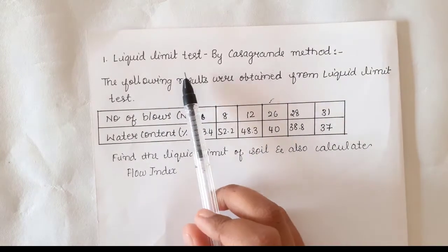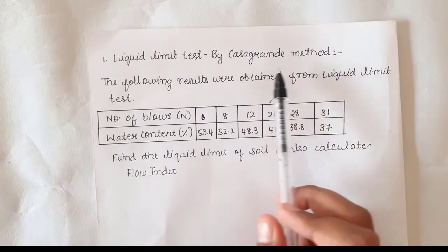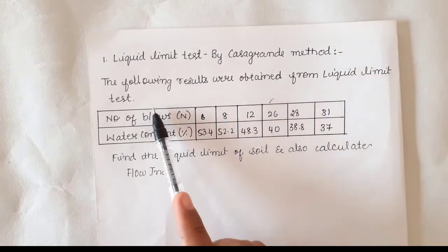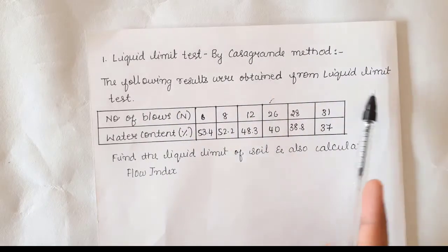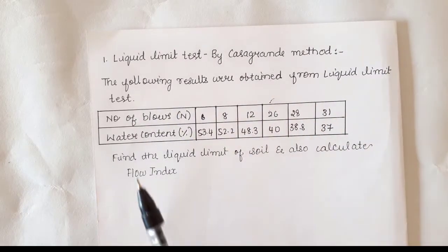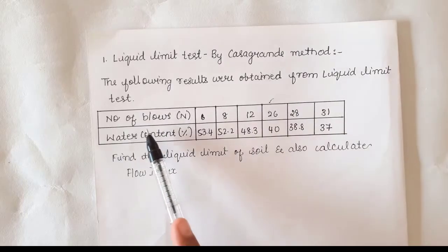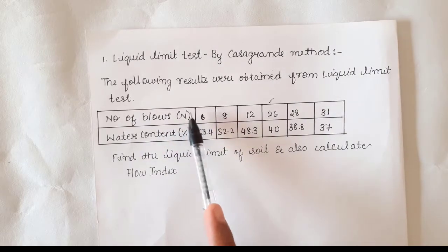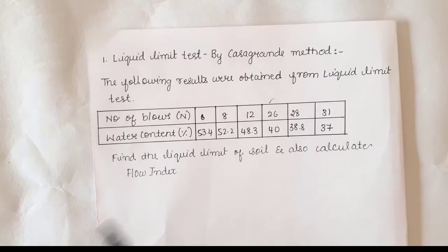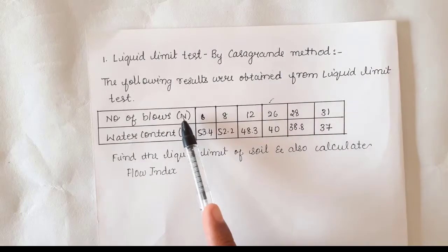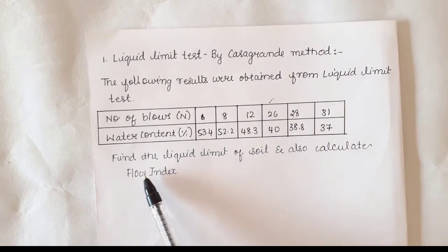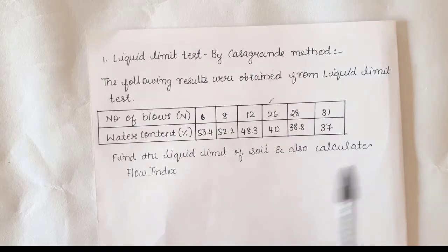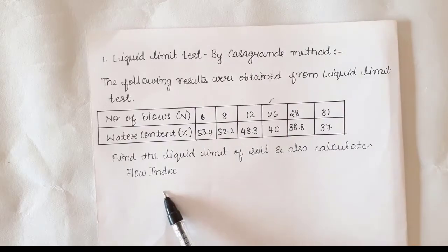The first method is the liquid limit test by Casagrande method. A question is given: the following results are obtained from the liquid limit test. The data given includes number of blows (N) and water content in percentage. From these two values you need to calculate the liquid limit of the soil and also calculate the flow index.